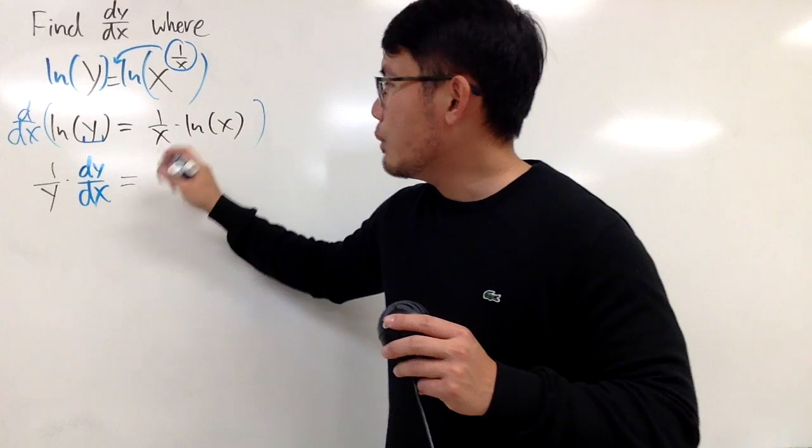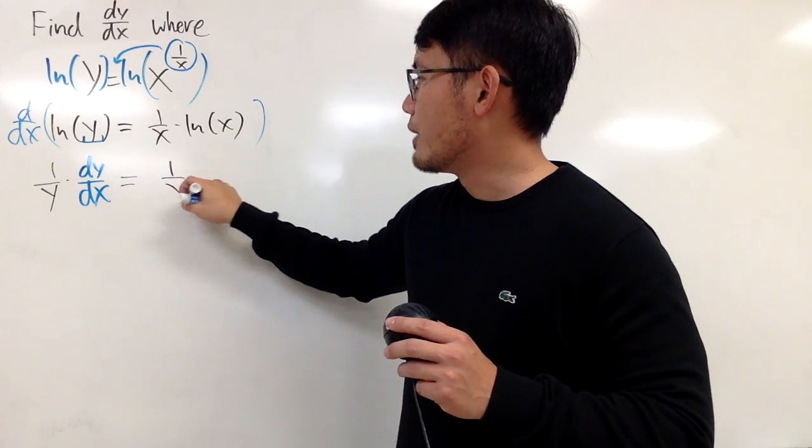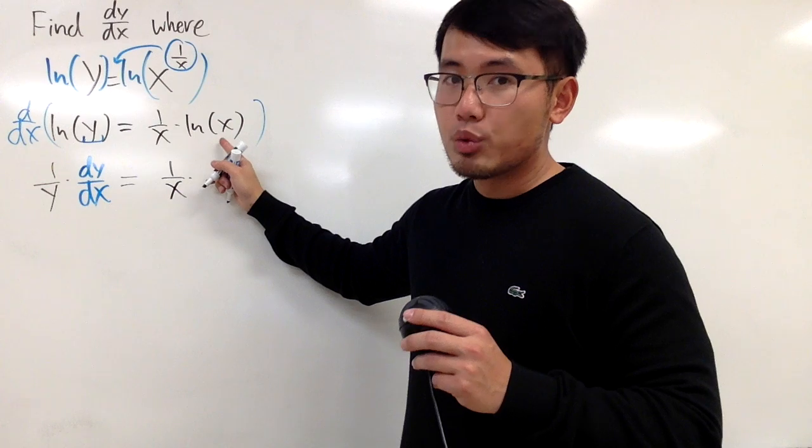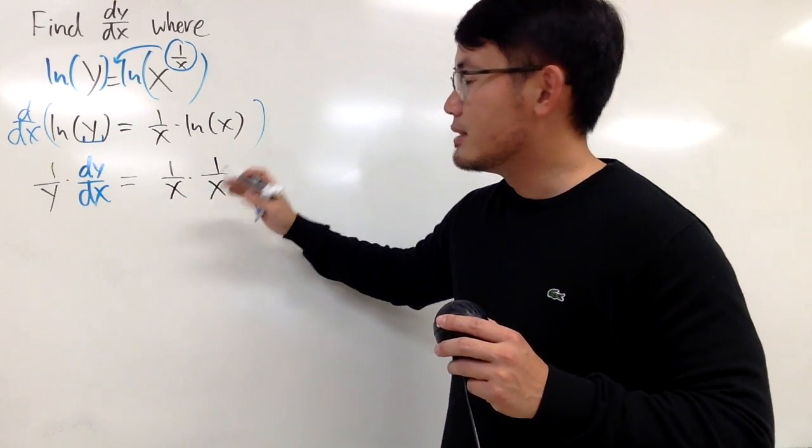On the right side, I'll use the product rule. Keep the first function, 1 over x, times the derivative of the second. The derivative of ln of x is 1 over x.